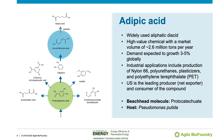Here we'll be focusing on one exemplar target, muconic acid, which can be catalytically hydrogenated to generate adipic acid. Adipic acid is considered one of the most important dicarboxylic acids because of its use in the production of plastics, including nylon-6,6, polyurethane, and polyethylene terephthalate.